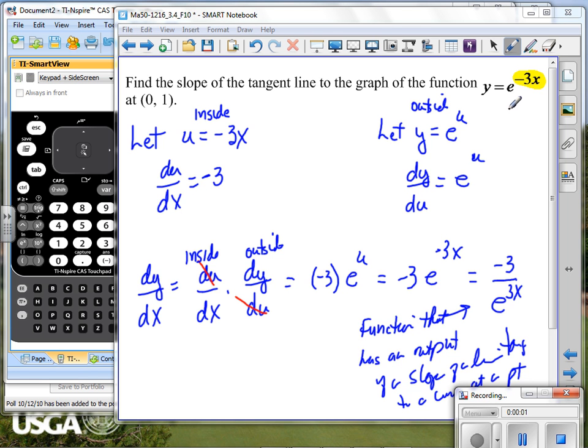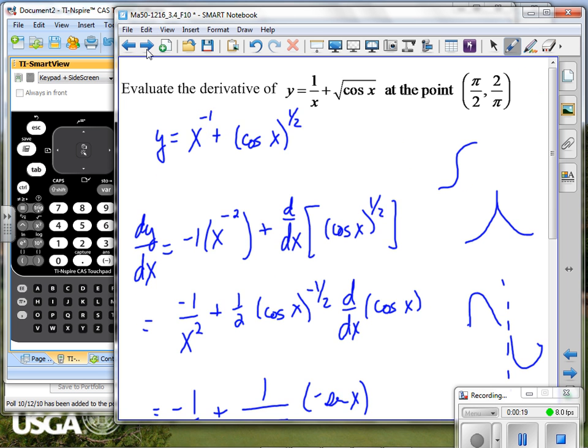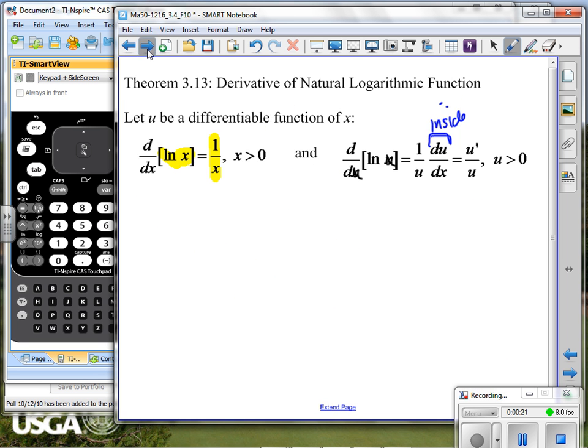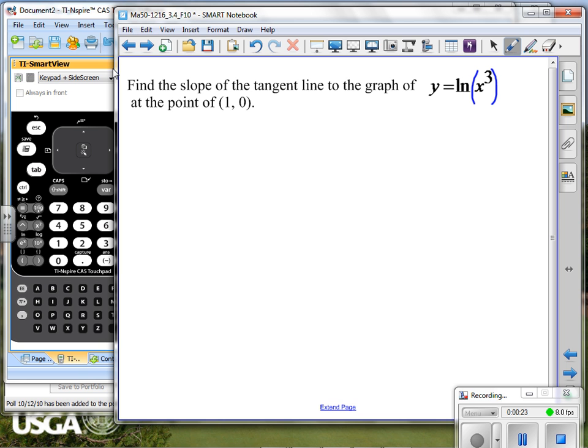The dominating function is going to override it and make it look more like it. So in this case, the dominating function, the outside function, is e to a power. I would expect this to look more like an exponential curve than a straight line. Now, you can't always go by that. There are some of these that kind of fool us a little bit. But that's another way for you to determine if you've got a composite function and which one's the inside and which one's the outside.